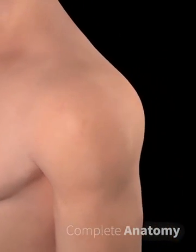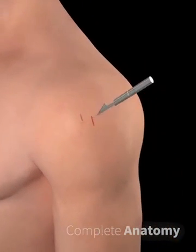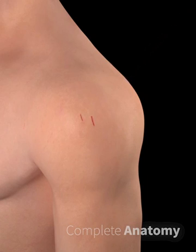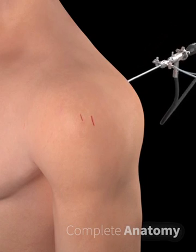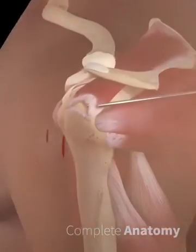The most commonly torn rotator cuff muscle is the supraspinatus muscle. Small incisions are made to allow arthroscopic investigation of the damaged region and to allow the instruments to access the region.